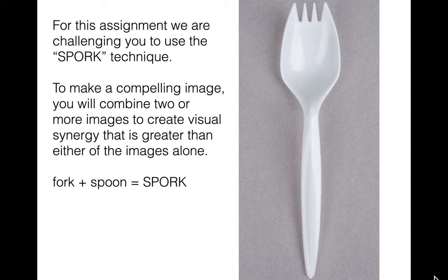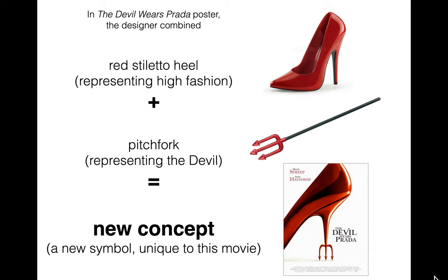We call this the spork assignment because you're going to combine two or more images to create a visual synergy that's greater than either of the images alone — the whole is greater than the sum of the parts. A fork plus a spoon is a spork, or one plus one equals three. For the Devil Wears Prada example, someone was thinking about what represents high fashion — high-heeled shoes — and then a pitchfork represents the devil. The skinny, spiky stiletto heel plus the pitchfork makes this new symbol.